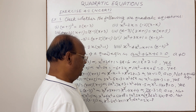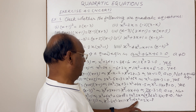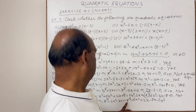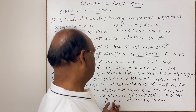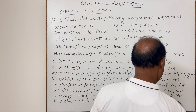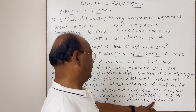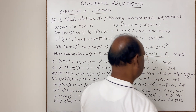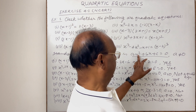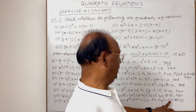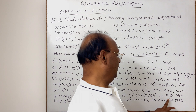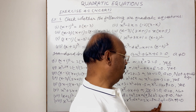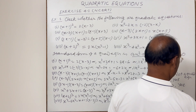Transposing: −6x² becomes +6x², so 6x² − 4x² = 2x²; 12x becomes −12x, so −x − 12x = −13x; and −8 becomes +8, so 1 + 8 = 9. The result is 2x² − 13x + 9 = 0. Here a = 2, b = −13, c = 9, all real numbers, and a = 2 ≠ 0, so this is a quadratic equation.